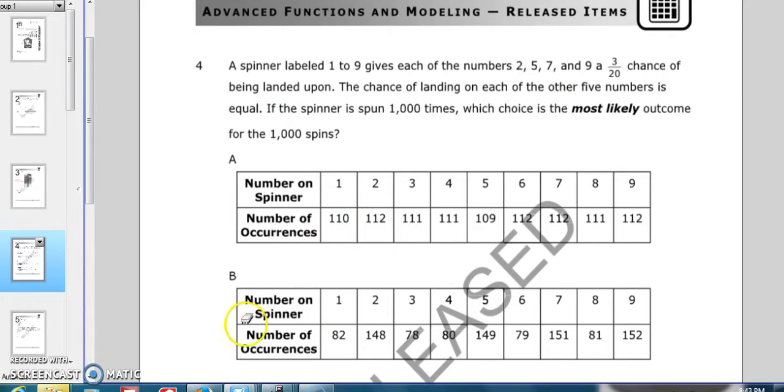We have these different tables of outcomes for 1,000 spins. So 2, 5, 7, and 9, we have 3 over 20. So we're going to go ahead and write that in. 2 and 5 and 7 and 9.